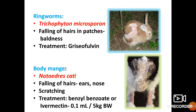Ringworm caused by Trichophyton or Microsporum involves folding of hairs in patches, that is baldness. Treatment involves griseofulvin. Body mange is mainly due to Notoedres cati. Clinical signs include scratching and folding of hairs around the ears and nose. Treatment involves benzyl benzoate or ivermectin at the dose rate of 0.1 ml per 5 kg body weight.